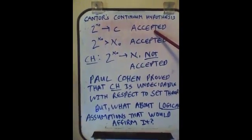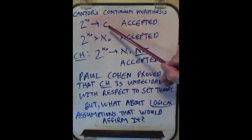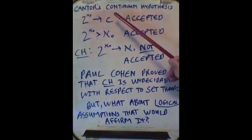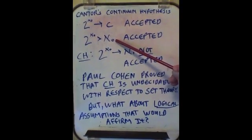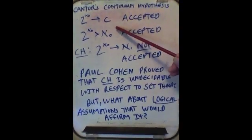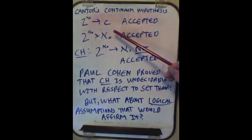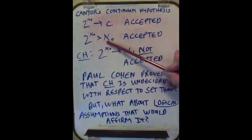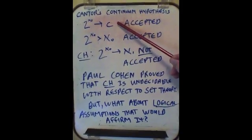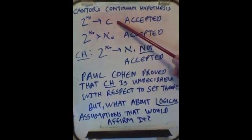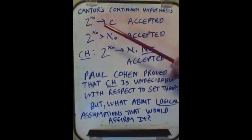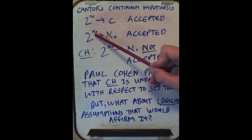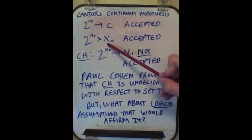C is the continuum — that means all possible real numbers, including transcendental numbers. Aleph-null would be the level of countability of rational numbers and algebraic irrational numbers like the square root of 2, phi, or the square root of 5. Those would be included within the aleph-null level of countability. But C would include numbers that are truly transcendental or not algebraic — effectively all real numbers — and those would be uncountable with respect to aleph-null. So 2 to the power of aleph-null being equal to C is uncountable with respect to aleph-null.